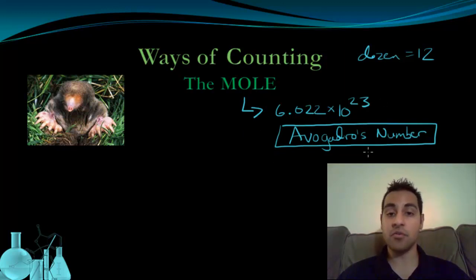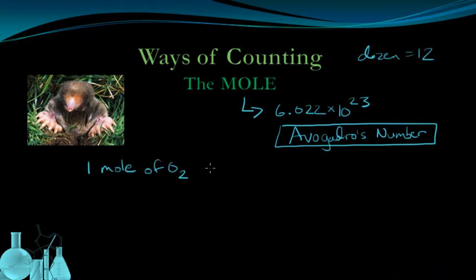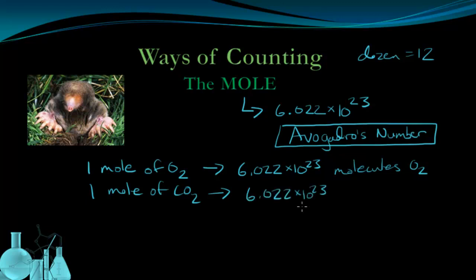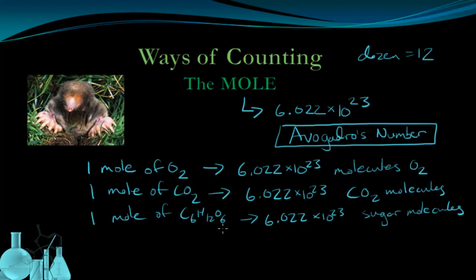Let's see what this looks like. One mole of oxygen is 6.022 times ten to the twenty-third molecules of oxygen, of O2. One mole of carbon dioxide is going to give us 6.022 times ten to the twenty-third carbon dioxide molecules. And as you might imagine, one mole of glucose, C6H12O6, is going to give us 6.022 times ten to the twenty-third sugar molecules. And you should remember that C6H12O6 is glucose, or blood sugar, from your biology class.